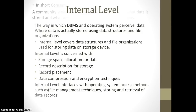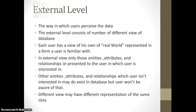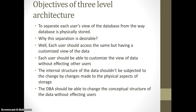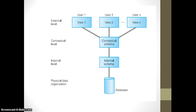Now that we have covered the external, conceptual, and internal levels, let's return to the diagram. The objective of three-level architecture is to separate each user's view of the database from the way the database is physically stored. This separation is desirable because: each user should be able to access the same data but have a different customized view; each user should be able to customize their view without affecting other users; the internal structure of the data should not change due to changes in the physical storage; and the database administrator should be able to change the conceptual structure without affecting users.